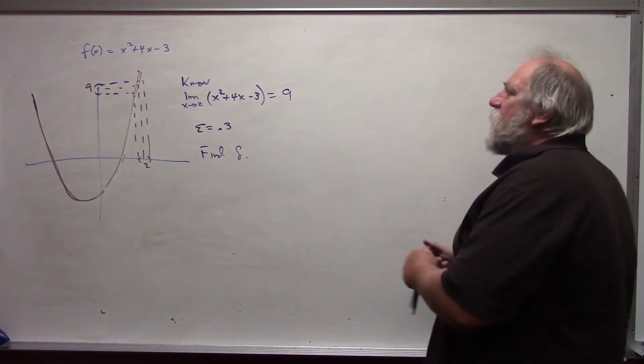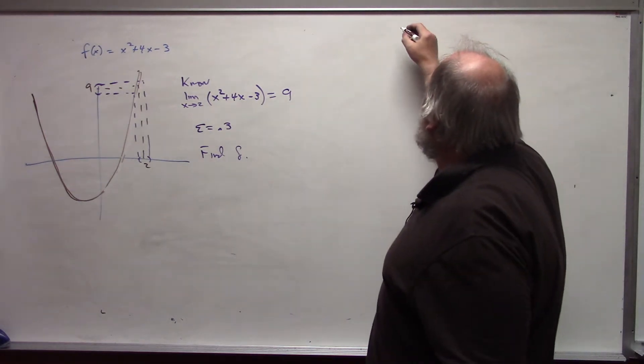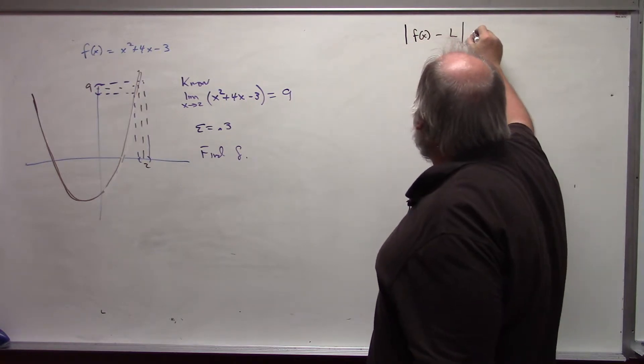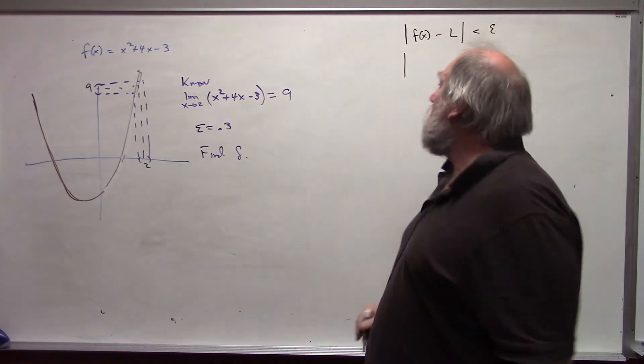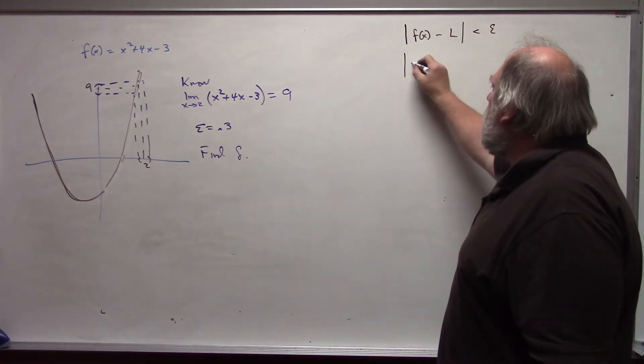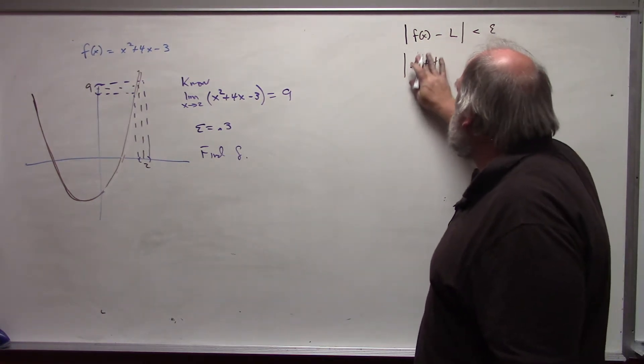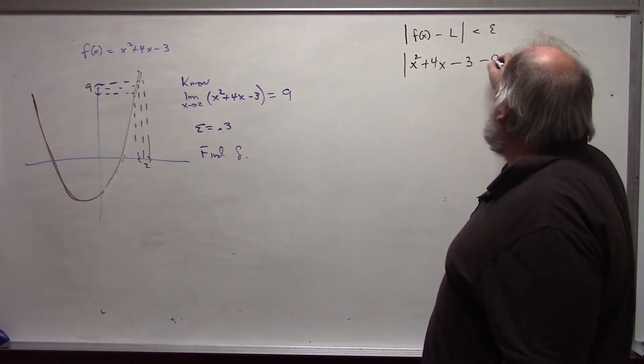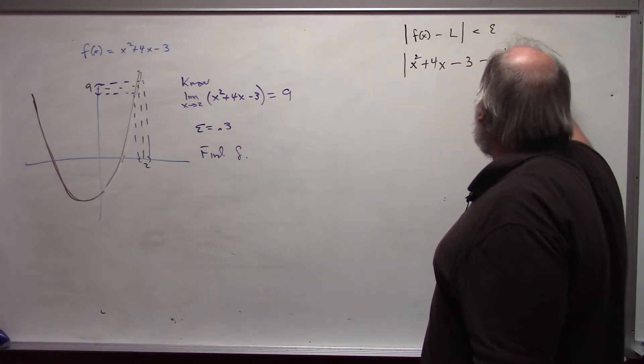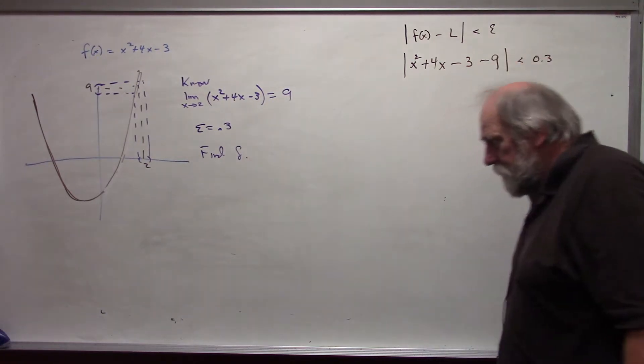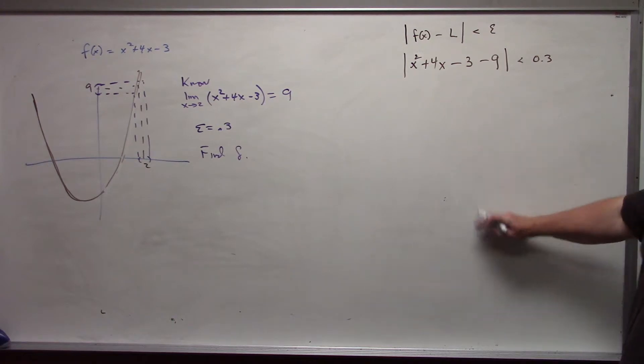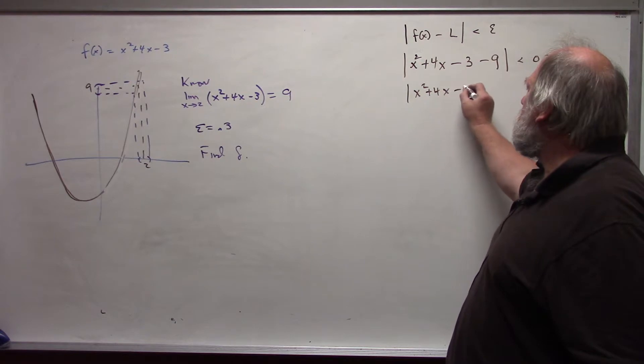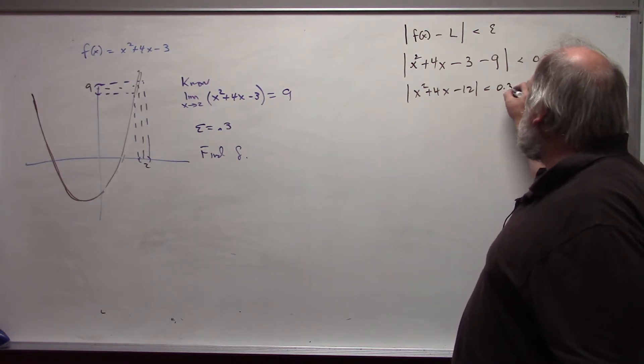I'm going to say the absolute value of f of x minus l is less than epsilon. Or in this case, I want epsilon to be 0.3. I get x squared plus 4x minus 3 minus 9 has to be less than 0.3. Or absolute value of x squared plus 4x minus 12 is less than 0.3.